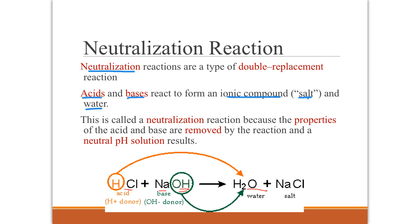This is called a neutralization reaction because the properties of the acids and bases are removed by the reaction. The high pH of the base, the low pH of the acid go away. You end up with a neutral pH solution because of the water, which has a neutral pH. The name comes from what's happening to the pH as the acid and the base combine. You can see in the little illustration here, the hydrogen from the acid and the hydroxide from the base come together to make our water, and what's left over is our salt, which in this example is sodium chloride.